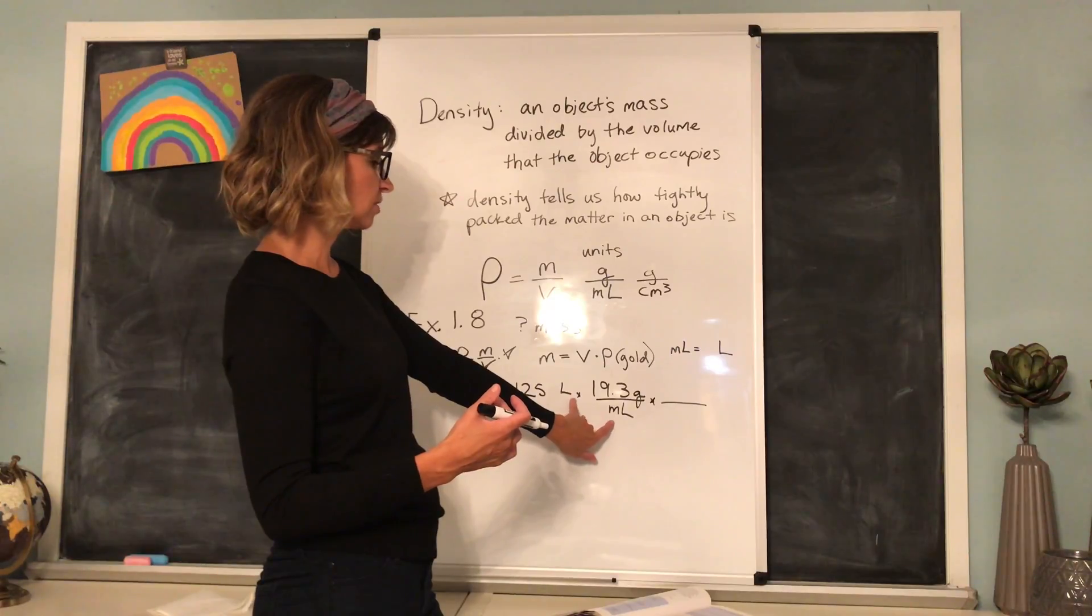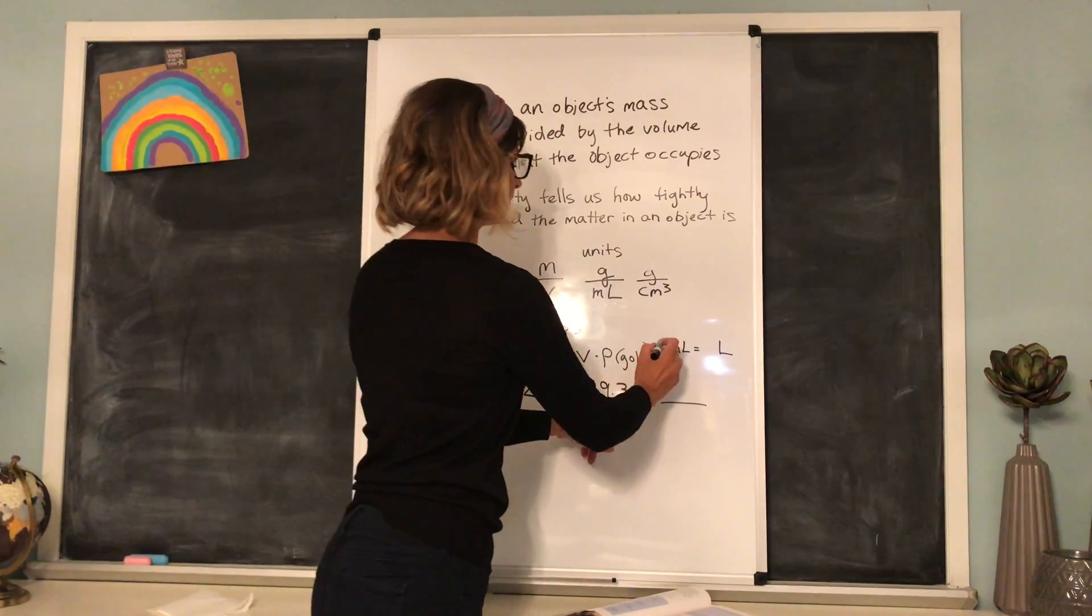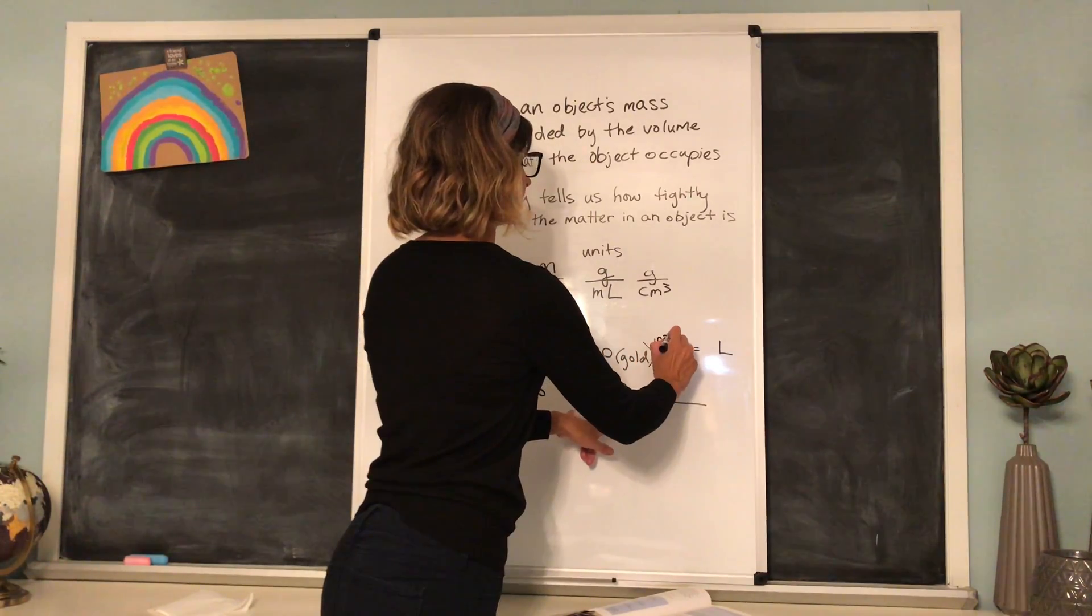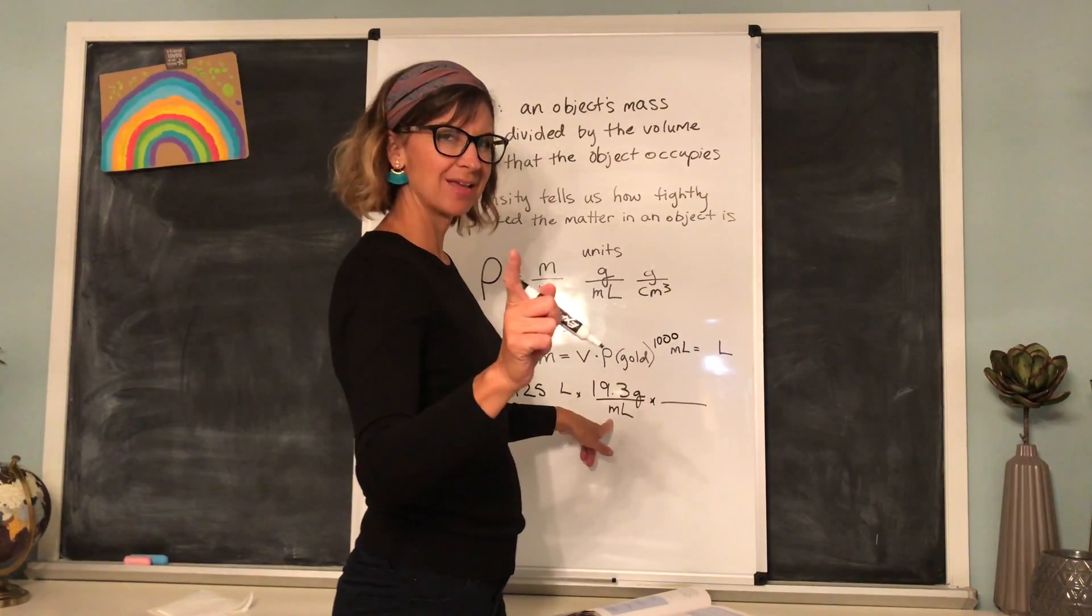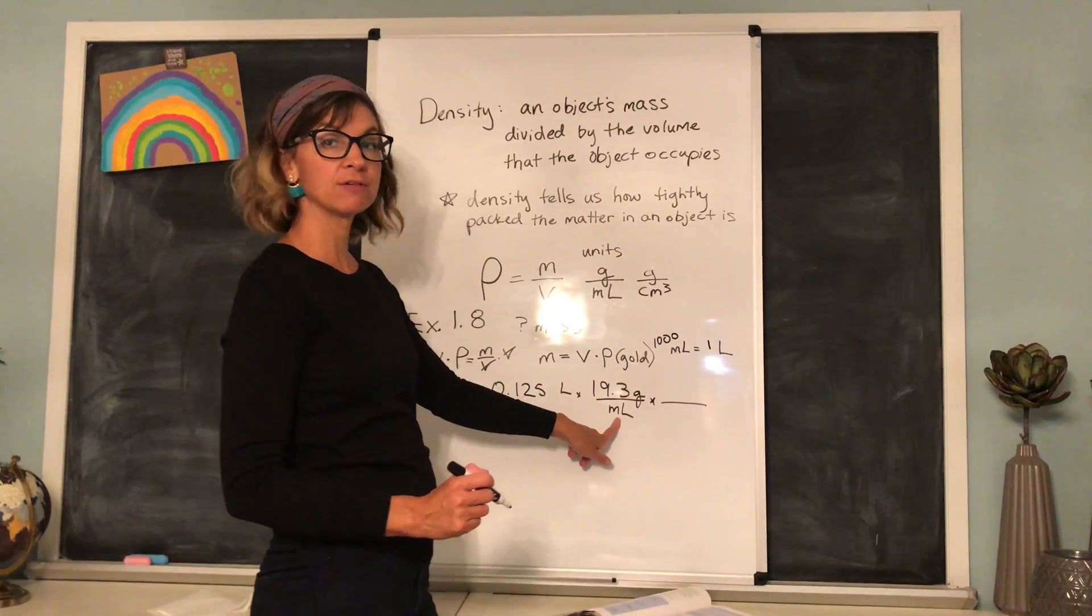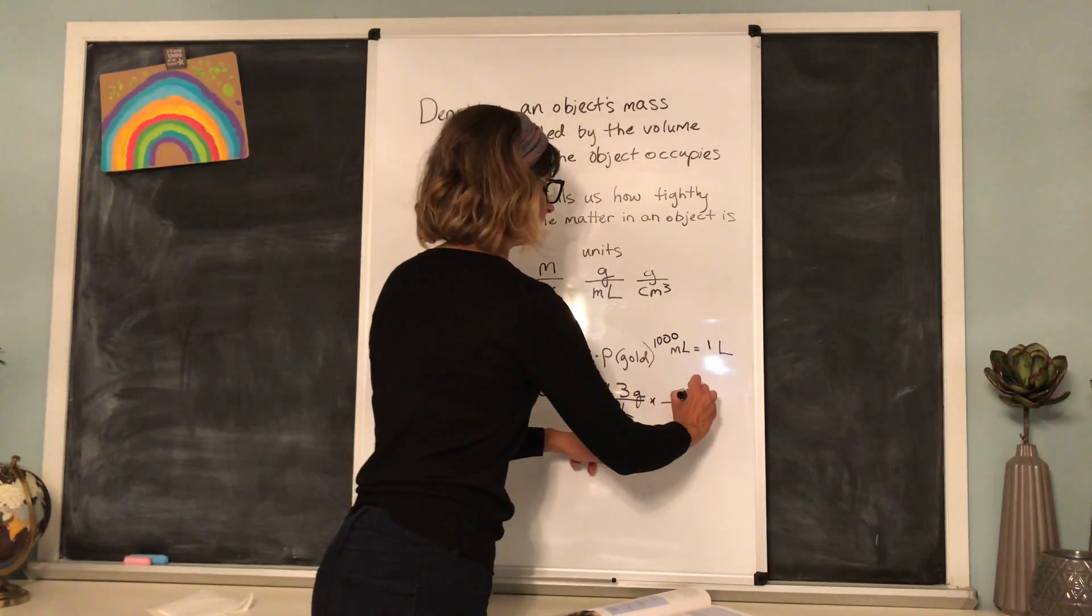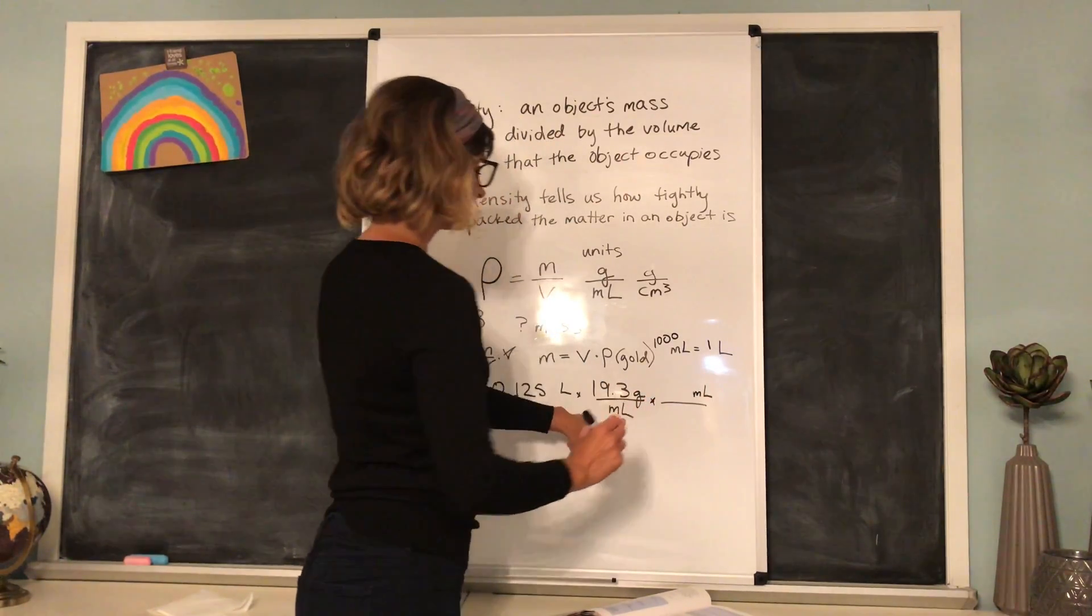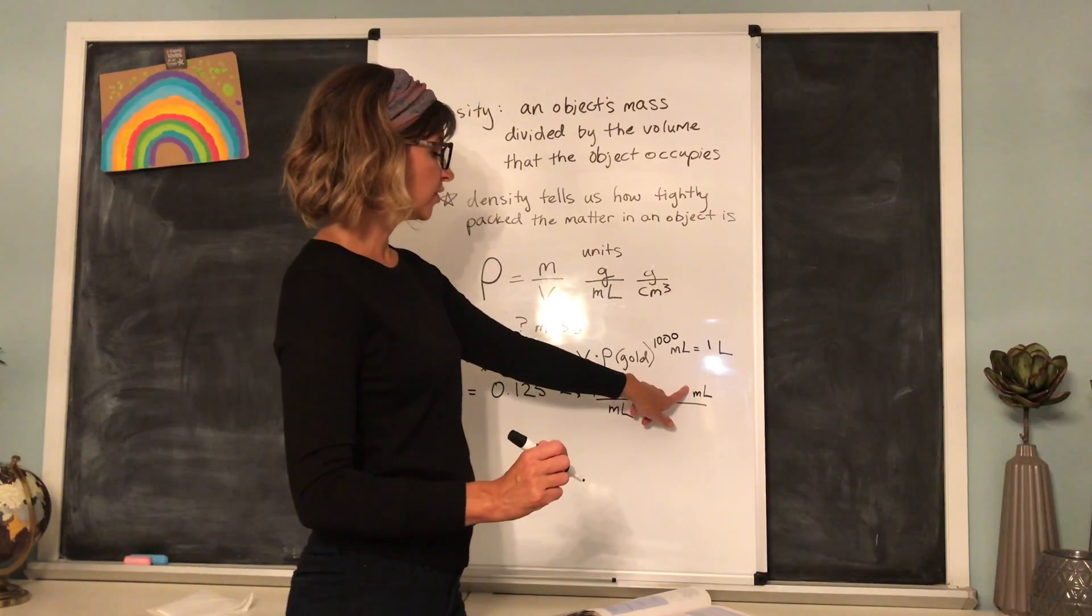So I know that our liters and our milliliters are going to need to cancel out. And so far, they're not matching, so they can't. How many milliliters are in a liter? That's right. Good job, guys. 1,000. 1,000 milliliters equals 1 liter. If I want milliliters to cancel out, and my problem, milliliters is in the denominator here, so it needs to be in the numerator here.